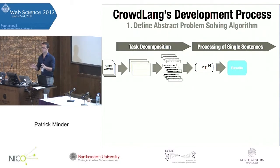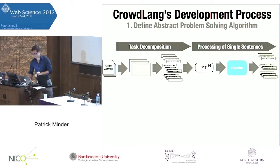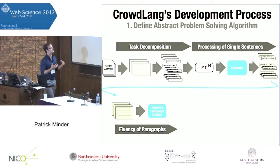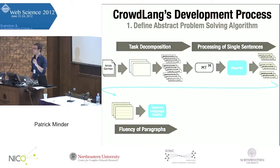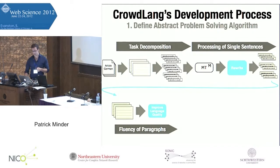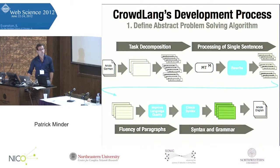We don't worry about getting really good answers at this stage — let's assume we have them now. We then have the possibility to aggregate all these sentences into paragraphs and perform further steps at the paragraph level, such as guaranteeing the fluency of the whole paragraph or enforcing consistent wording. And last but not least, we check that all the grammar and syntax in our translation is correct, and hopefully we have a good translated text.